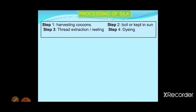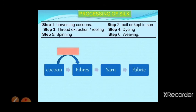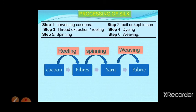The processing of silk has six steps: first, harvesting of cocoon; second, boiling or sun drying; third, thread extraction or reeling; fourth, dyeing — adding different colors; fifth, spinning — turning fiber into yarn; and sixth, weaving — turning yarn into fabric. The three main processes are: reeling to get fiber from the cocoon, spinning to make yarn, and weaving to make fabric.